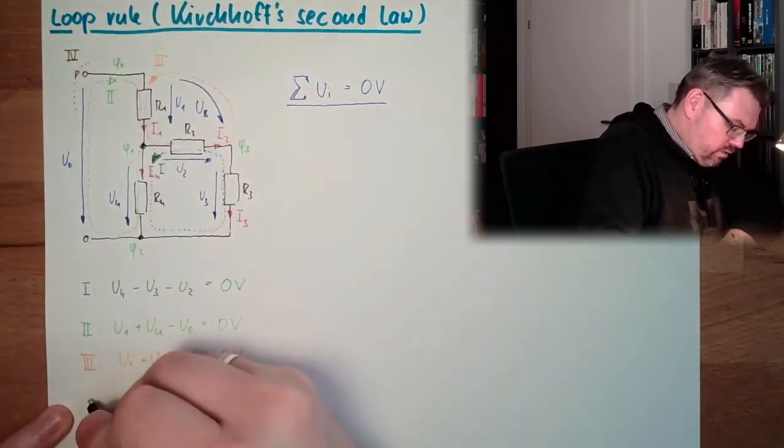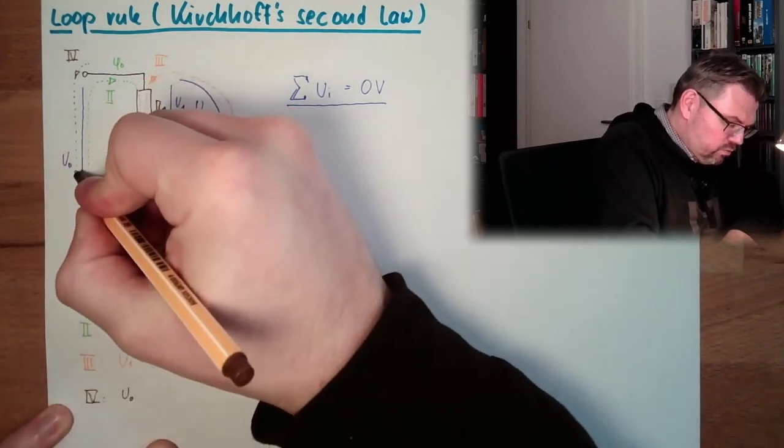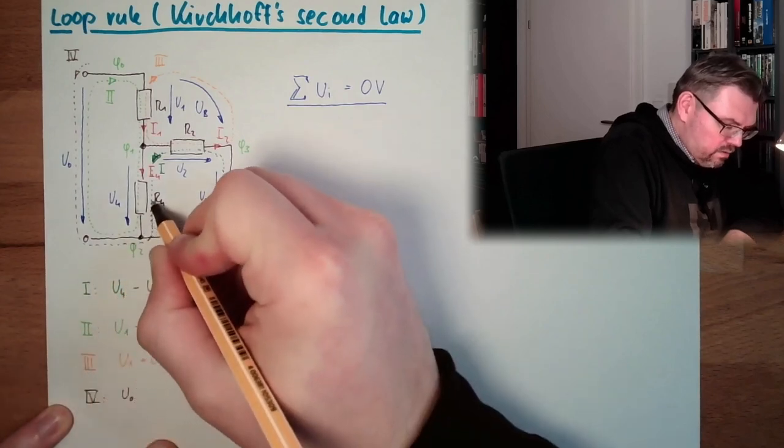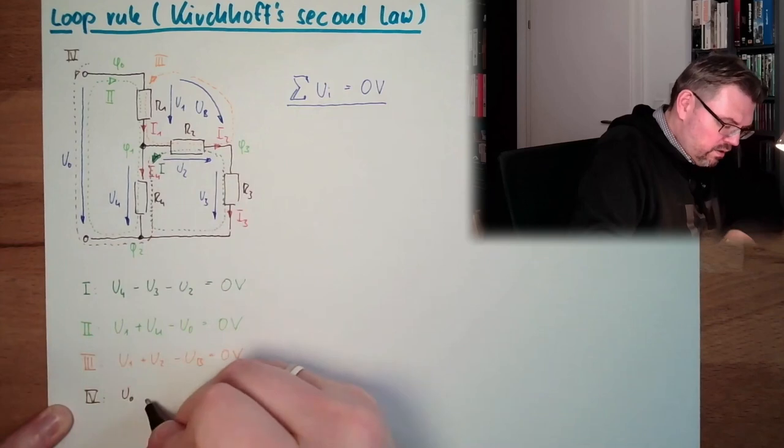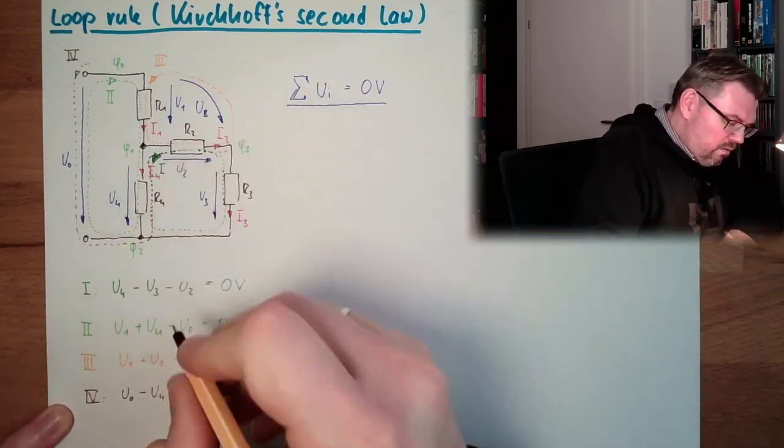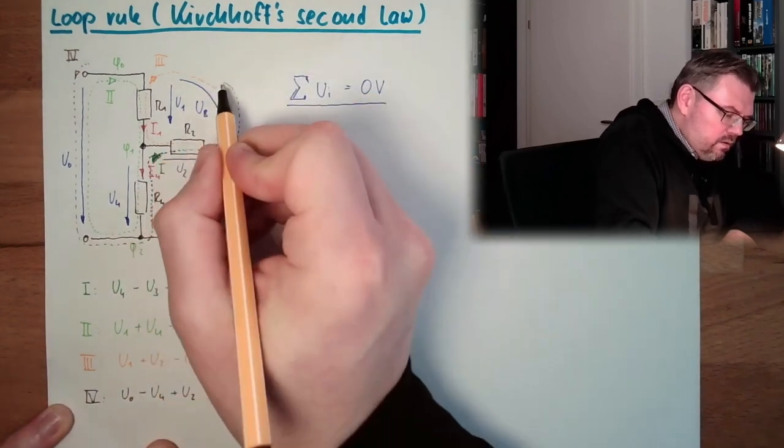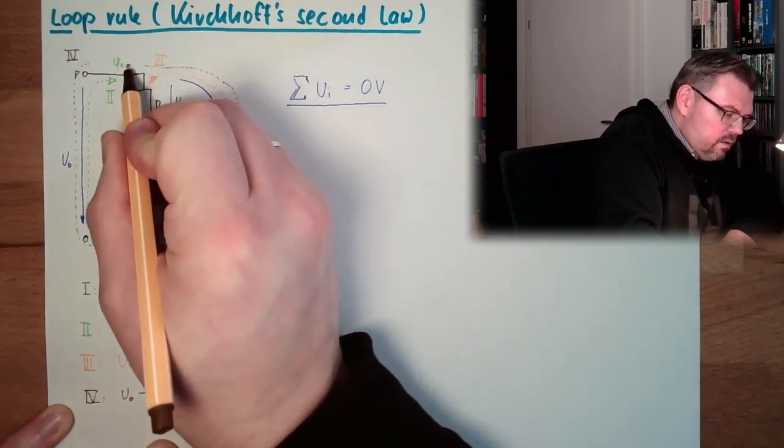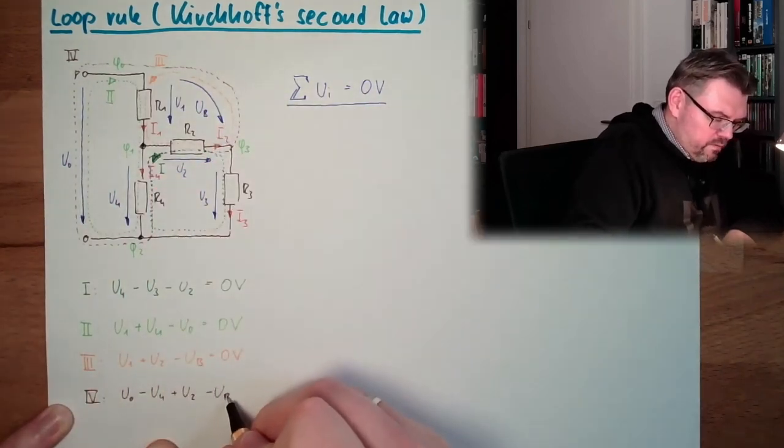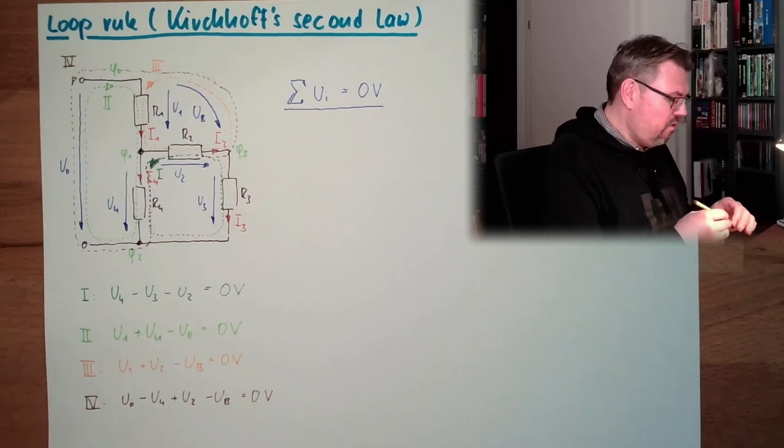And now last example, let's start here, this time in this direction, loop number four. First one is U0 in the same direction going down, going up and now we're going up here. Minus U4, now we're going up here, plus U2, now we're going up here, minus Ub and then we're here again, zero volts.